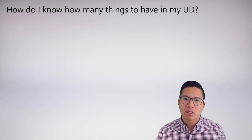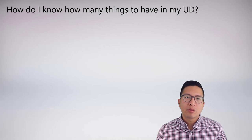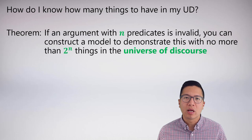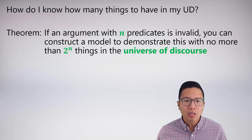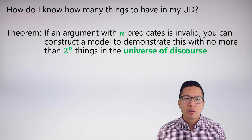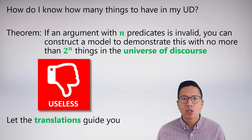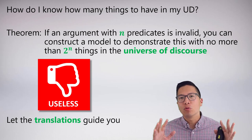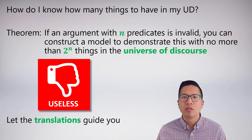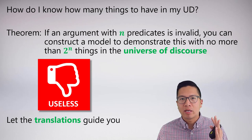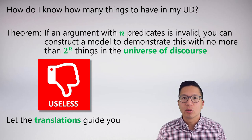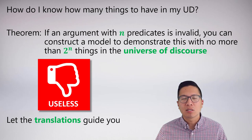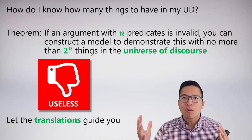A common question is: how many things should be in the universe of discourse? There is a theorem giving the upper bound: if an argument with n predicates is invalid, you can construct a model demonstrating this invalidity with no more than two to the n things in the universe. However, this theorem is not practically useful — I don't suggest you ever apply it when generating models. What you should do is let the translation guide you and be flexible, adding elements as needed based on the demands of the translation.